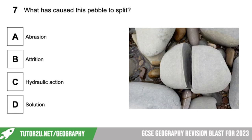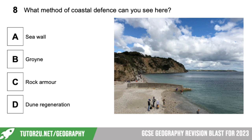Number seven: what has caused this pebble to split? Is it abrasion, attrition, hydraulic action, or solution? All are forms of erosion, but it is attrition — this has happened because the rocks are knocking together. Eight: what method of coastal defence can you see here? Is it a seawall, a groin, rock armour, or dune regeneration? It is a groin, which we have just spoken about.